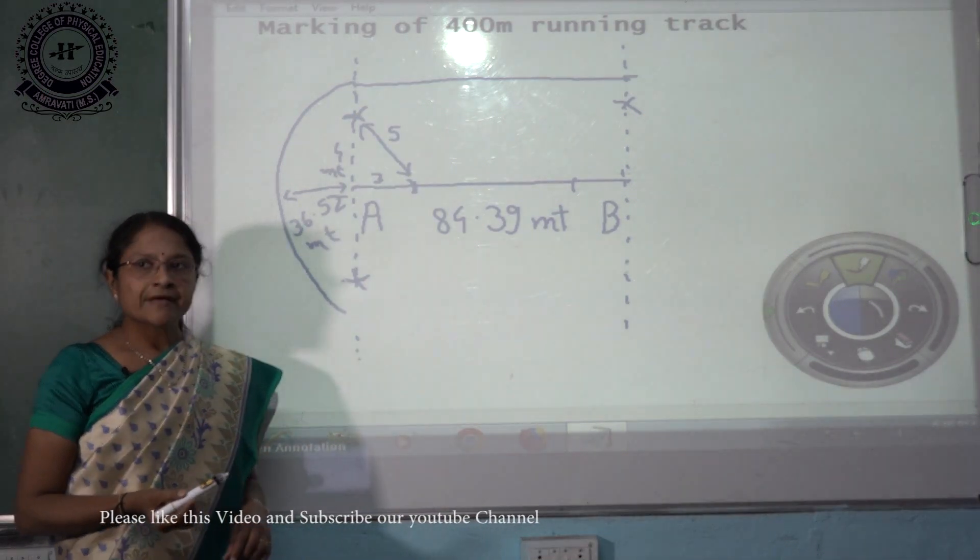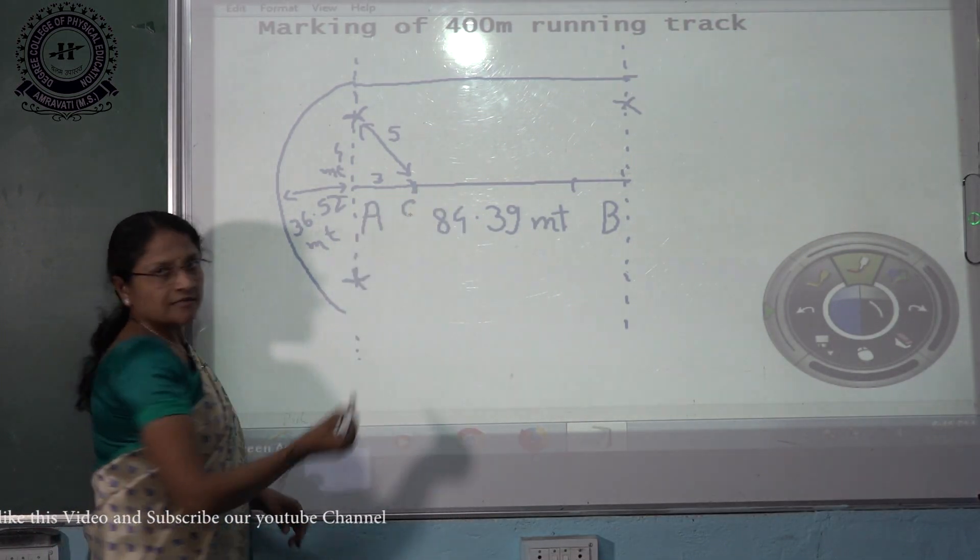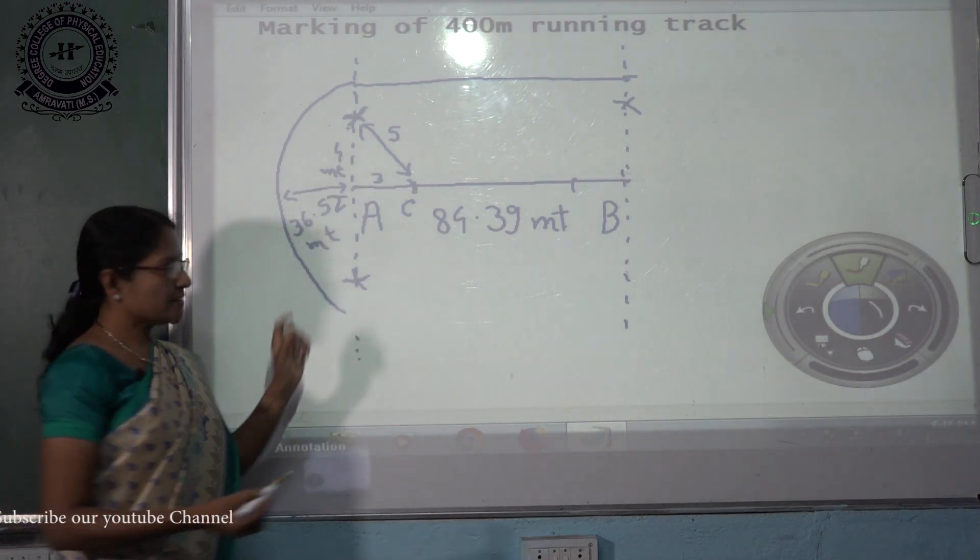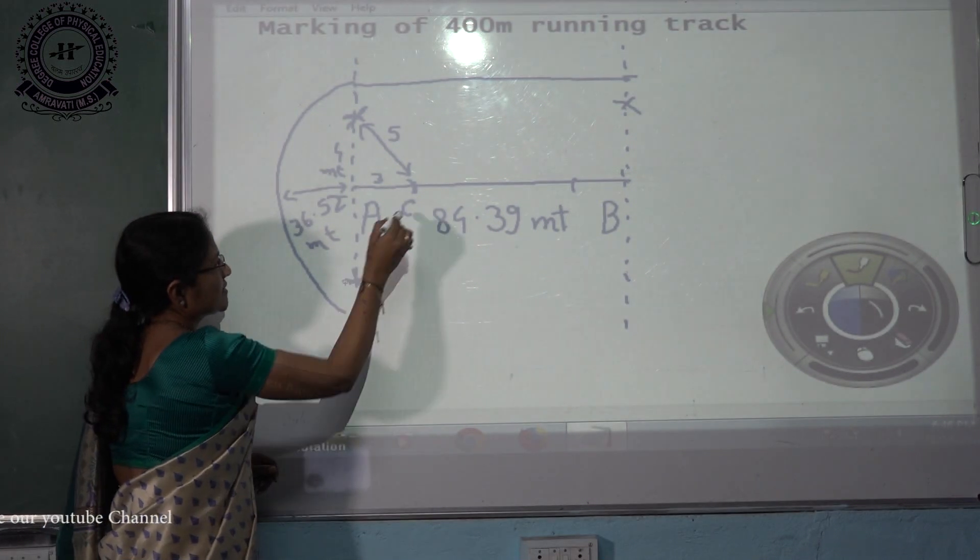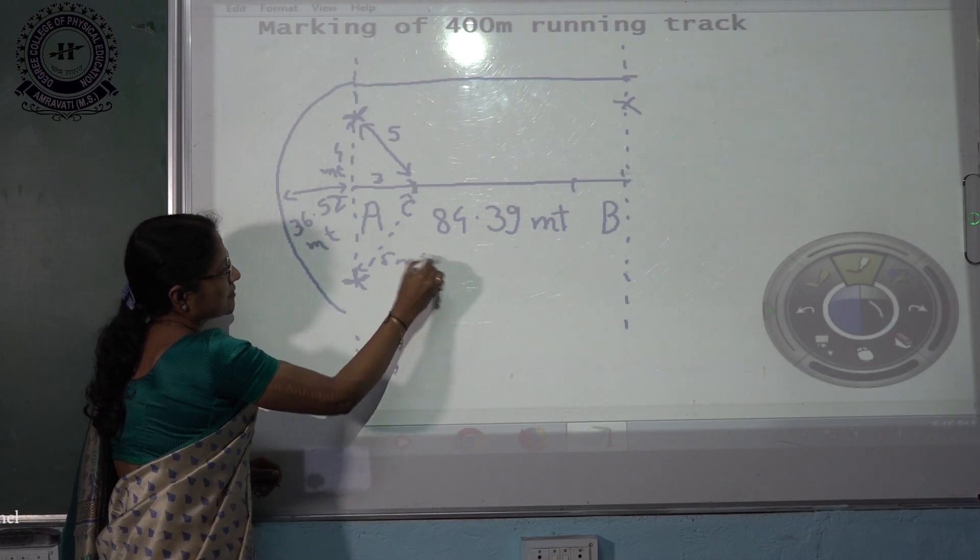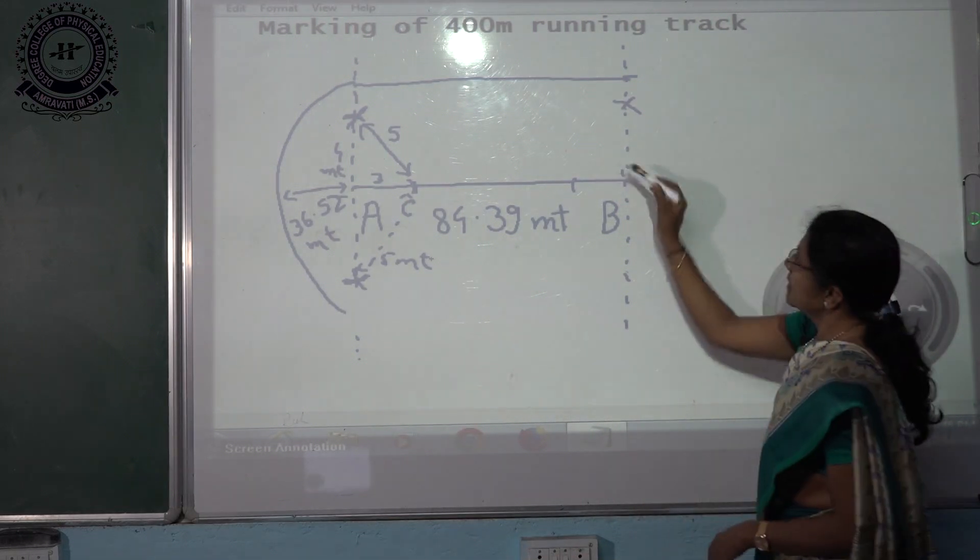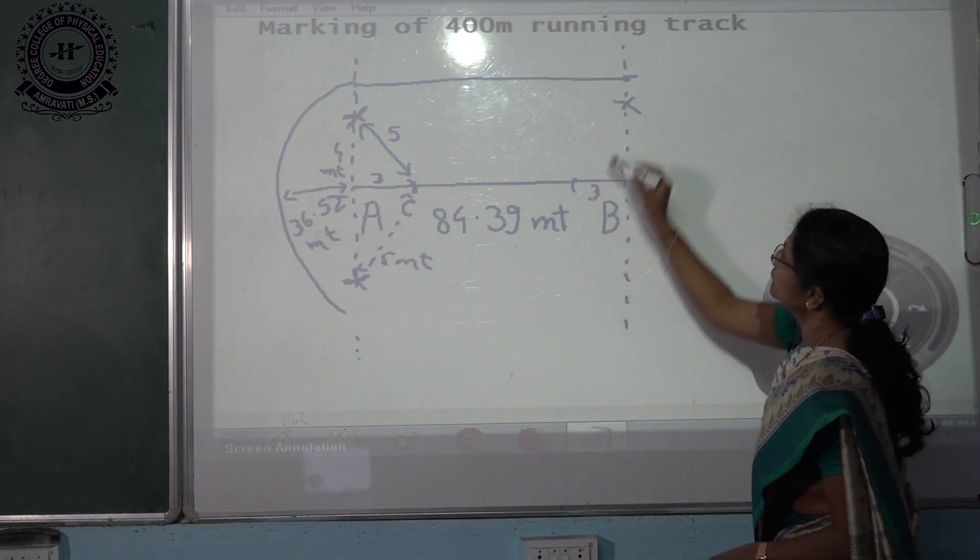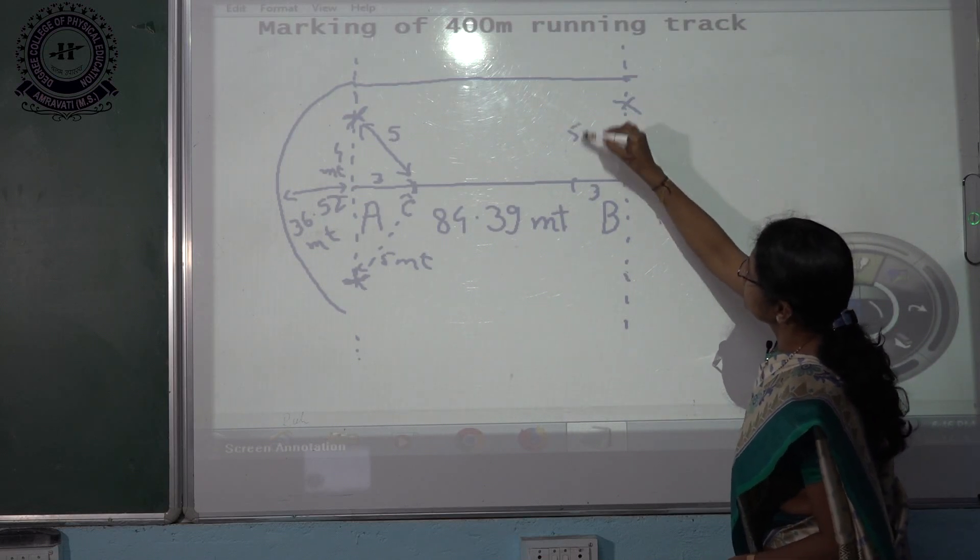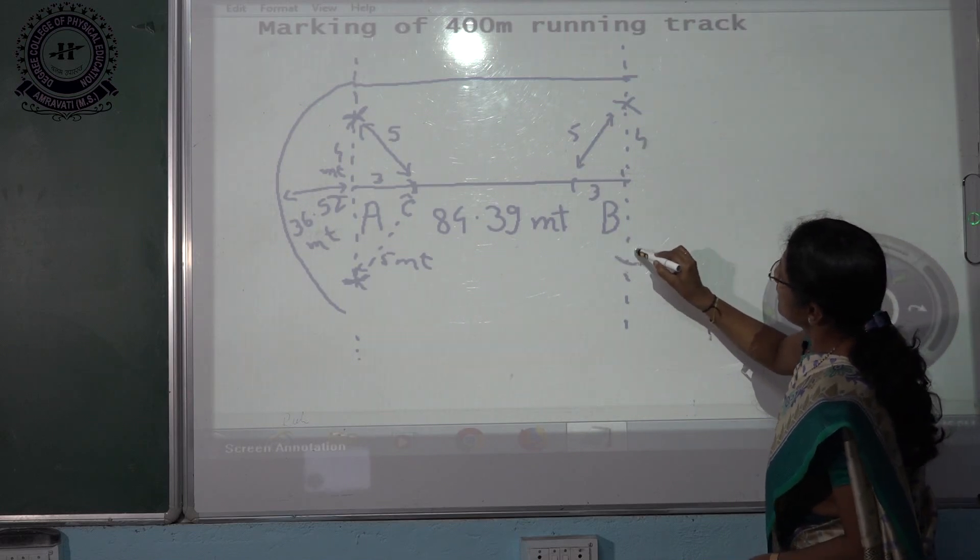Now take 5 meter distance with C as a center and draw 5 meter curve here which intersects the previous curve. This distance is 5 meters. Same from this point. This 3 meter curve, this one is 4 meter and this is 5 meter. This distance is 5 meter and same here.